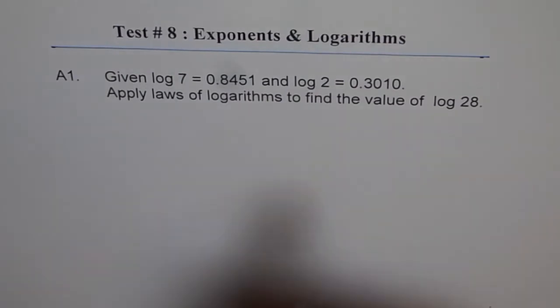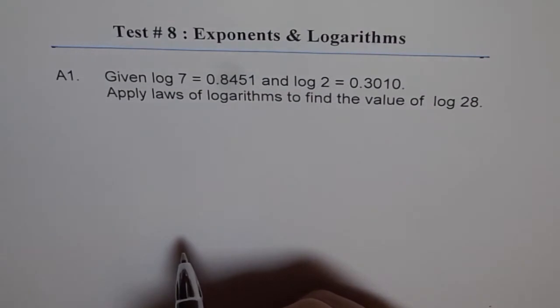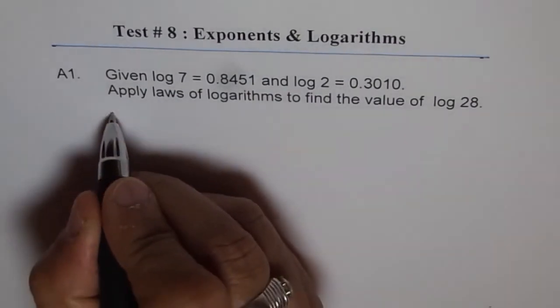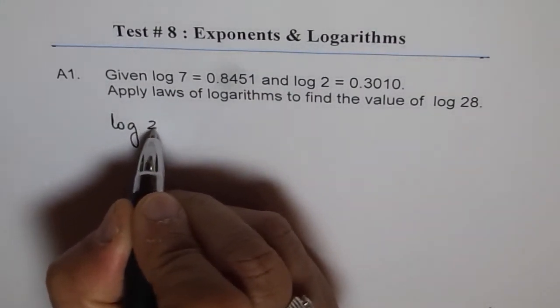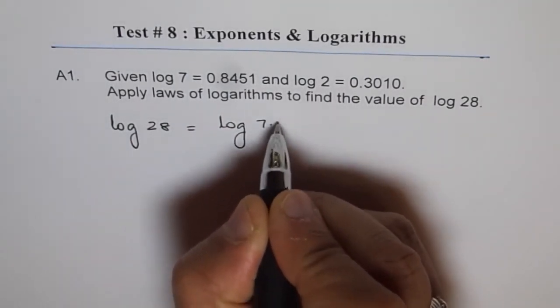Basically we have to write log 28 in terms of 7 and 2. We can do it in a couple of ways. One way is to write log 28 as log of 7 times 4.